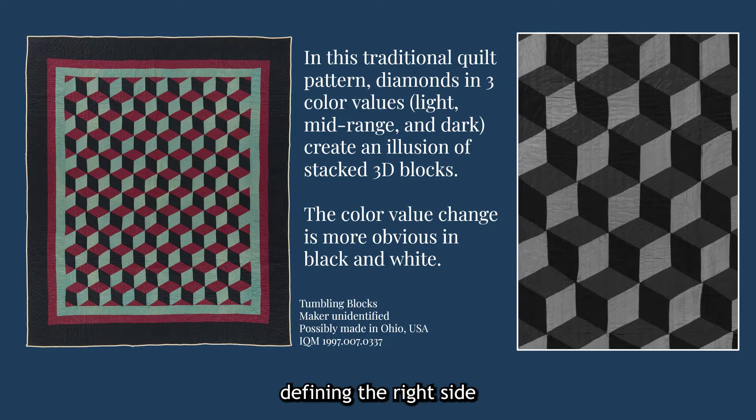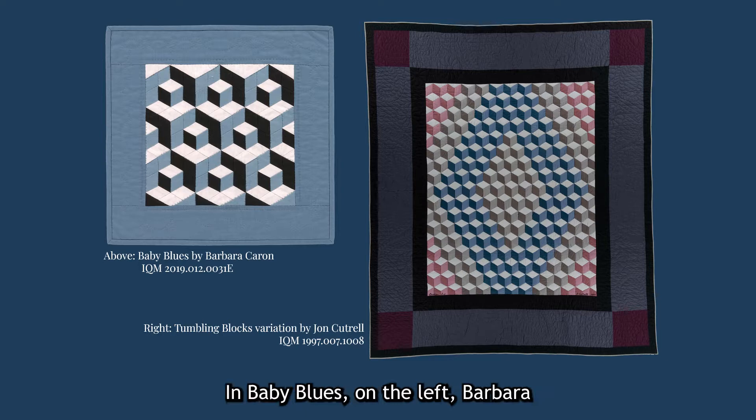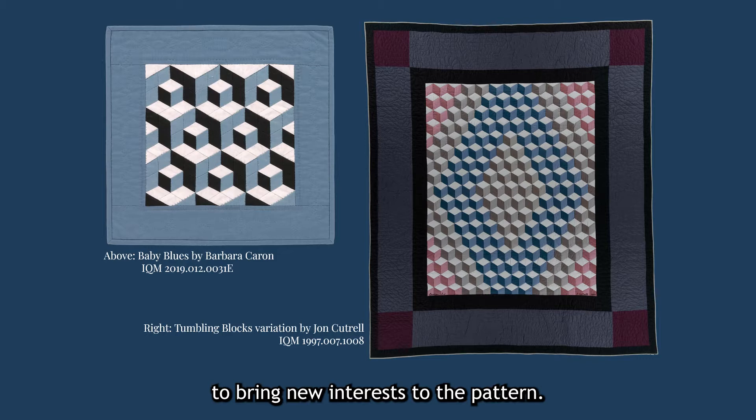Consider these variations. In Baby Blues on the left, Barbara Caron maintains the same colors and value relationships, while changing scale to bring new interest to the pattern. On the right, John Cuttrell's tumbling blocks variation adds an element of color to create radiating diamonds in pink, tan, and blue.